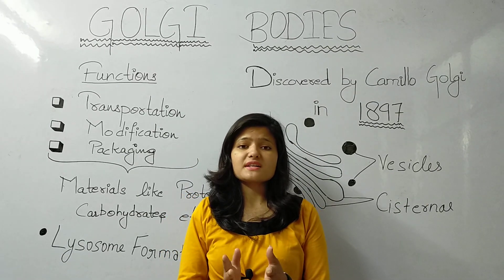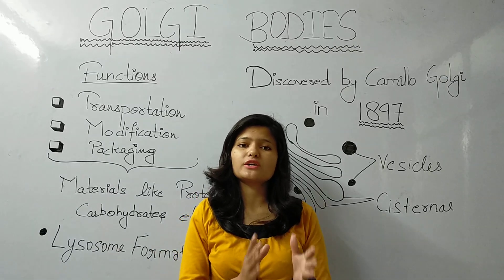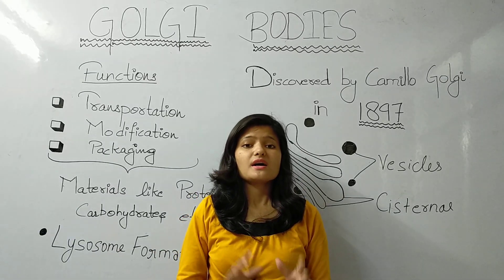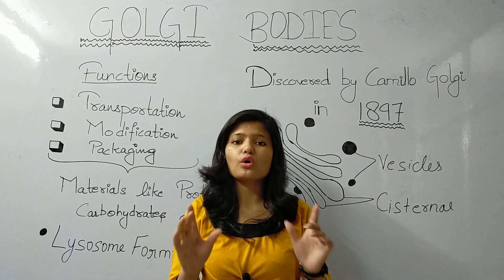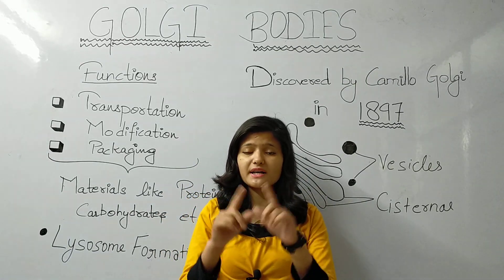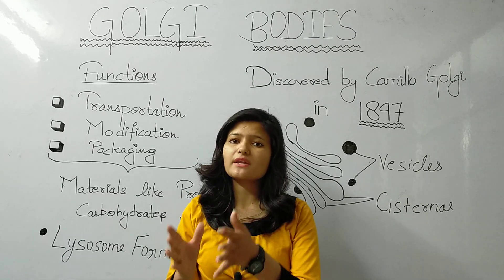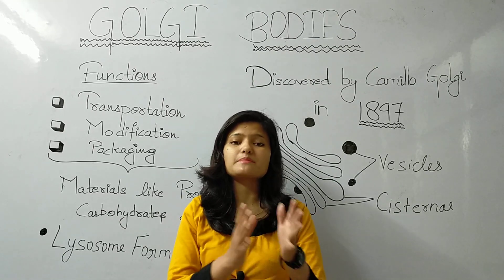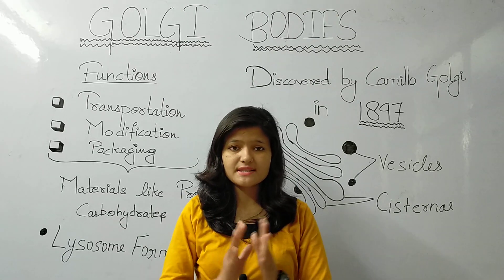If you talk about plants in the cell, the Golgi bodies are called dictyosomes. This organelle is double membrane bound. It is present in eukaryotic cells and is absent in prokaryotic cells.